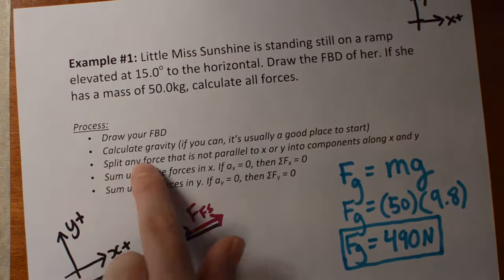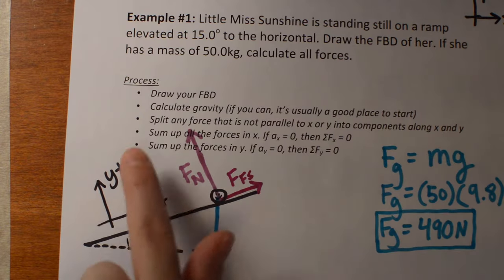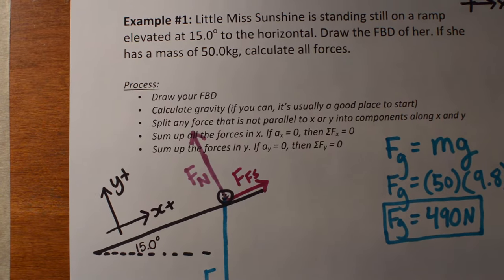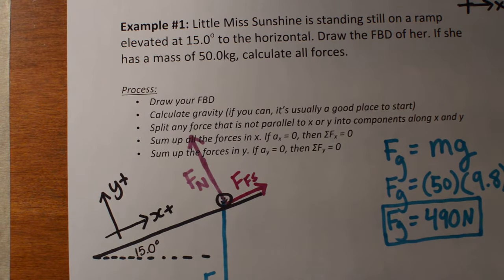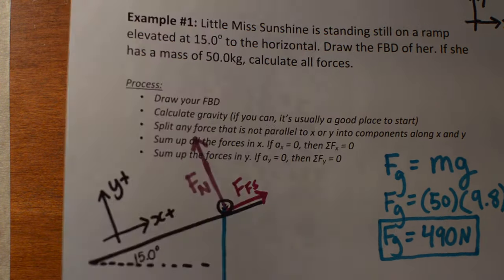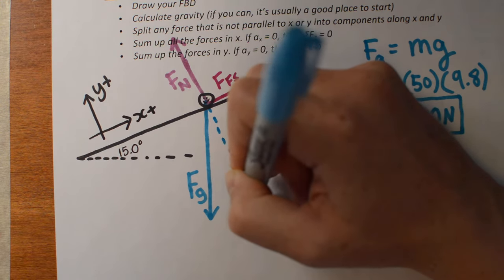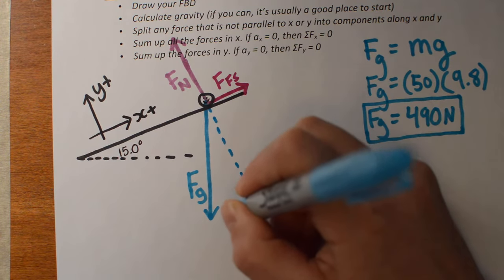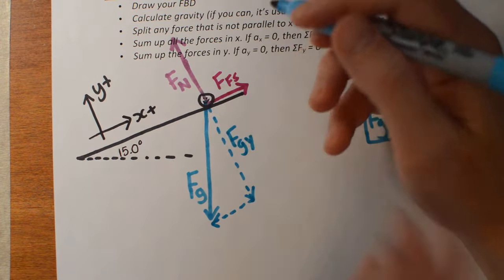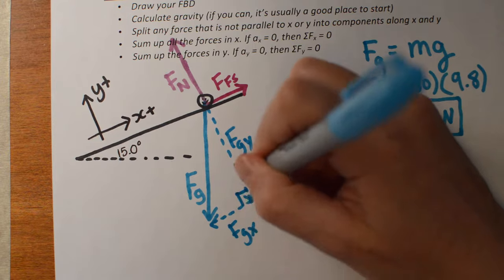When I'm splitting up any force that's not parallel to x and y, Fn and Ffs are actually already good. Fn is parallel to y because that's 90 degrees to the hill — by definition, the normal force is always 90 degrees to your surface. The friction force is parallel to the surface — also by definition. So the only force I have to split into components is Fg: one component 90 degrees to the hill (fgy) and one parallel to the hill (fgx).